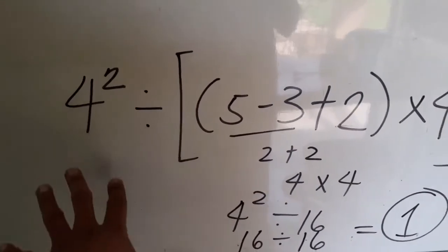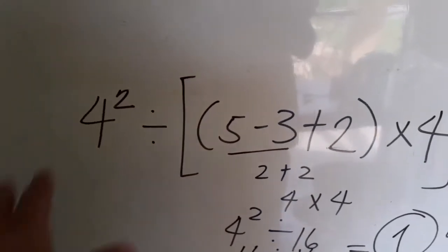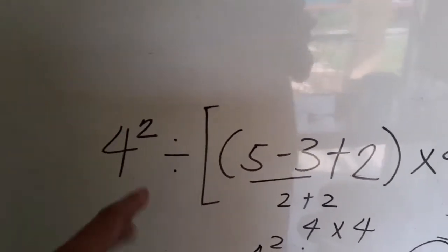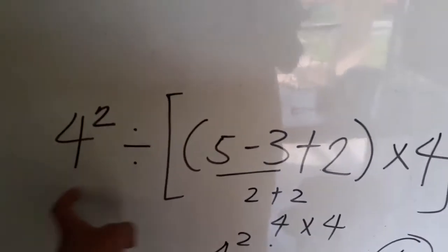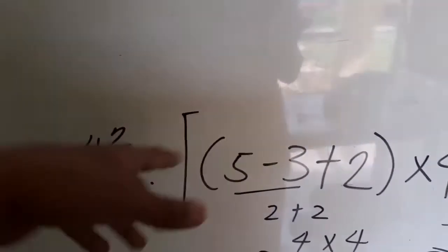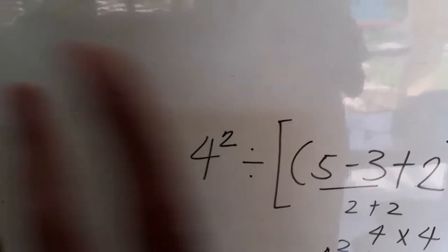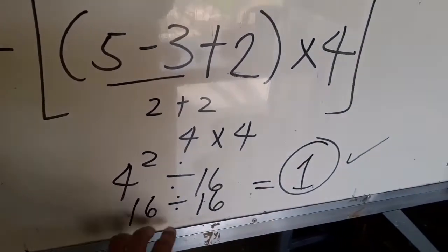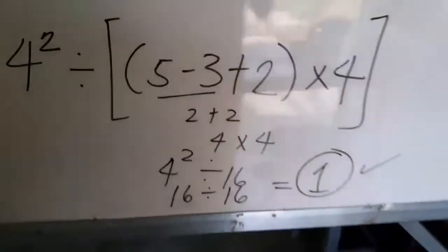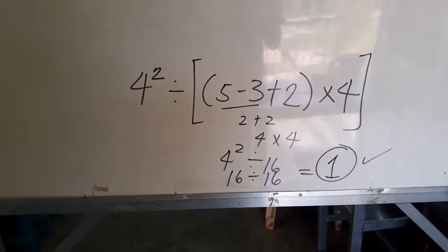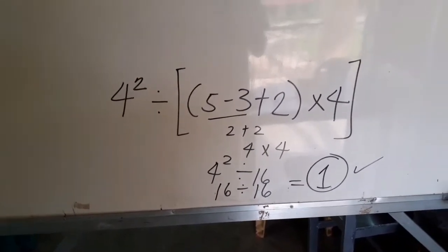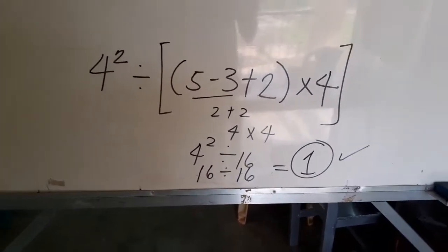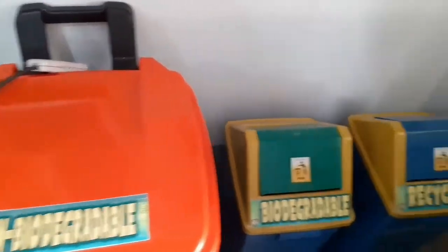Now we're going outside the bracket or braces. So that's sixteen. Then four squared divided by sixteen. Four squared means you are not going to multiply four by two — it means four times four. The exponent tells you how many times the base is to be multiplied by itself. So four times four gives us sixteen, and sixteen divided by sixteen gives us one. So four raised to the second power divided by the quantity of five minus three plus two times four — the answer is one, ladies and gentlemen.